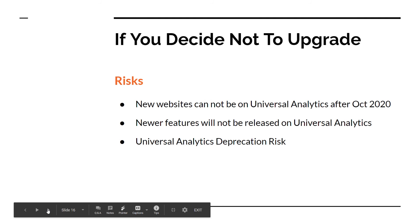If you decide to upgrade, what are the risks? And if you do not upgrade, what are the risks? If you or your company launches a new website or app, it can no longer be on Universal Analytics after October 2020 — all new apps and websites will be on Google Analytics 4 by default, meaning you will need to learn it anyway. In the last couple of months, no new features have been released for Universal Analytics while multiple features continue to be released for GA4, which means Universal Analytics appears stagnated. In the mid to long term, Universal Analytics will face a risk of deprecation. Although Google hasn't given a specific date, it's not a question of if — it's just a question of when.